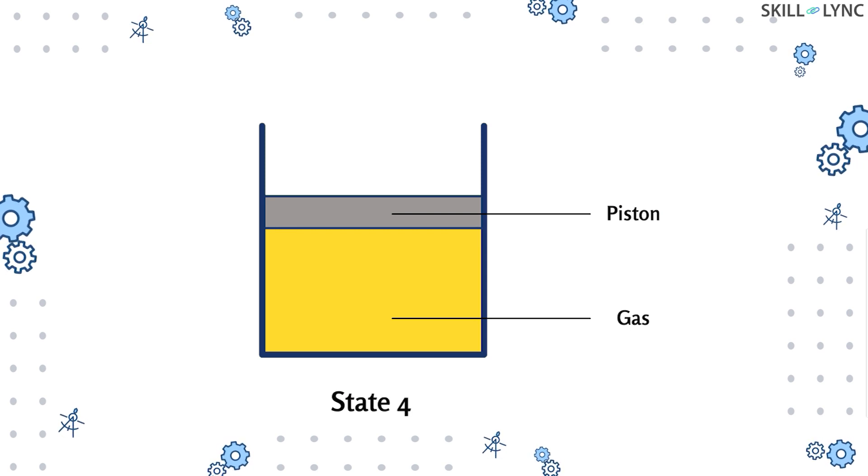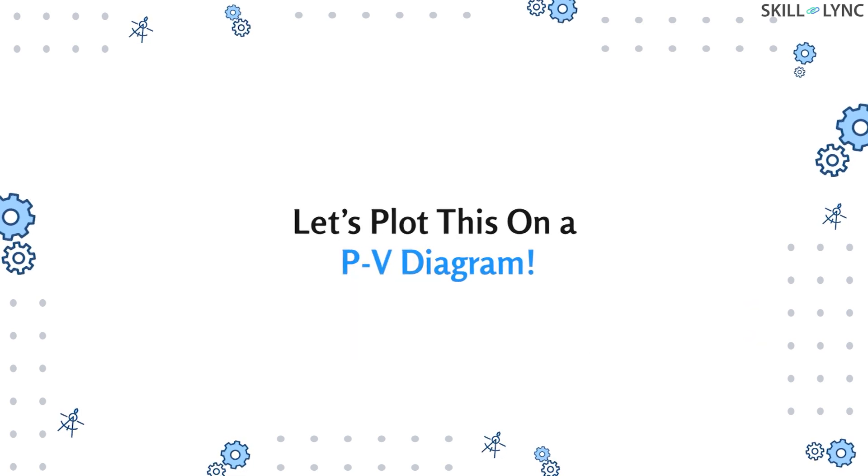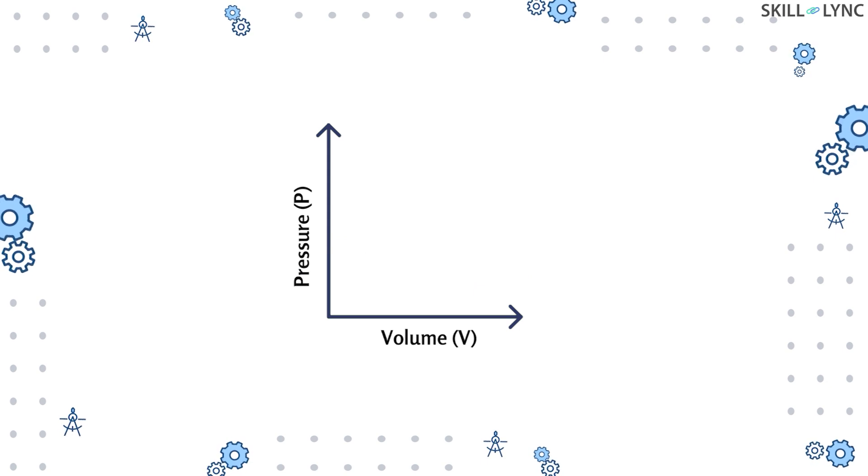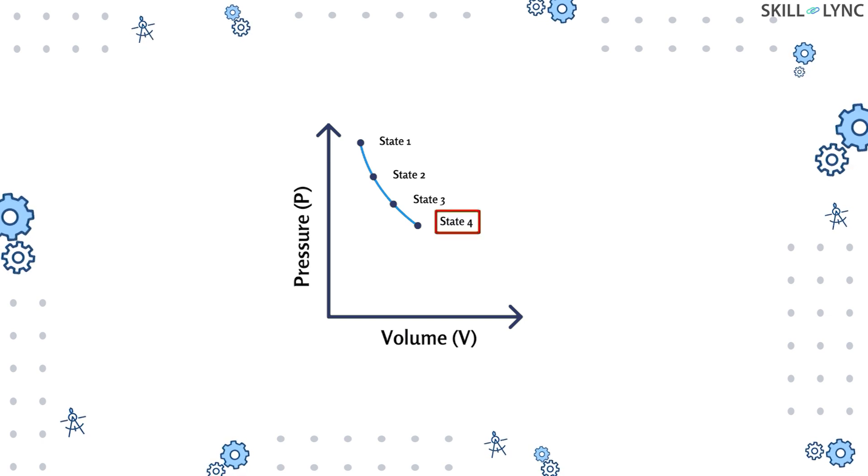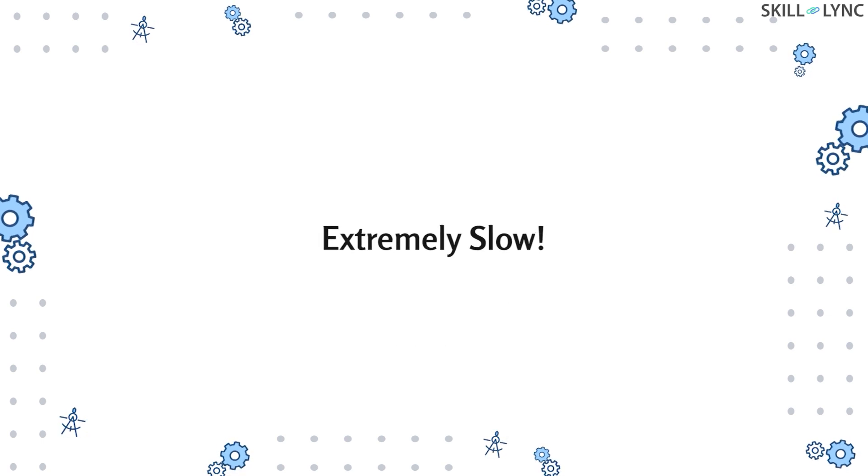We'll plot this on a PV diagram. As you can see, there are two intermediate states between state one and state four, namely state two and state three. This means that the gas under compression has to pass through states two and three to reach state four according to the theory of quasi-static process.